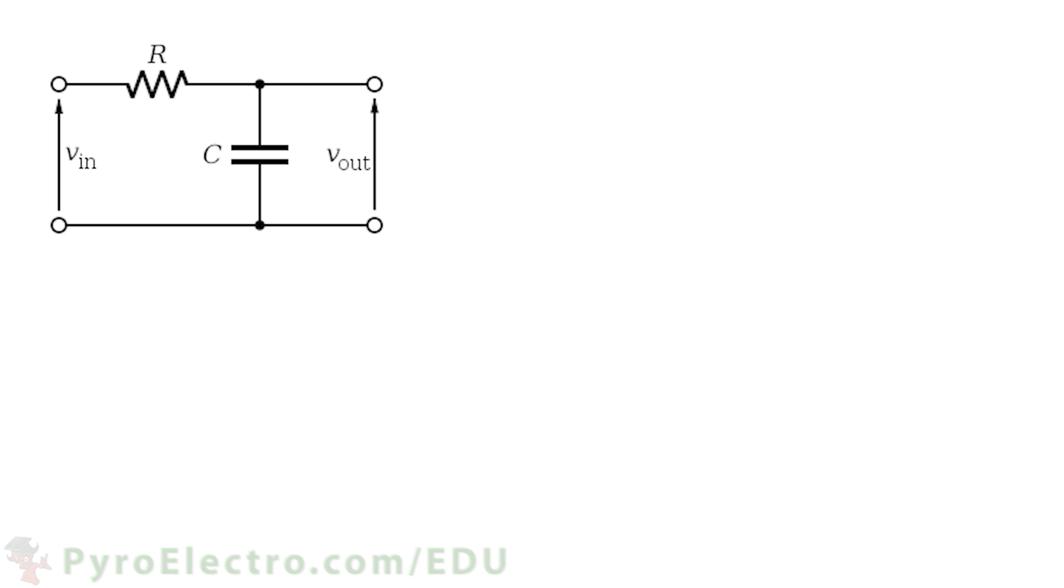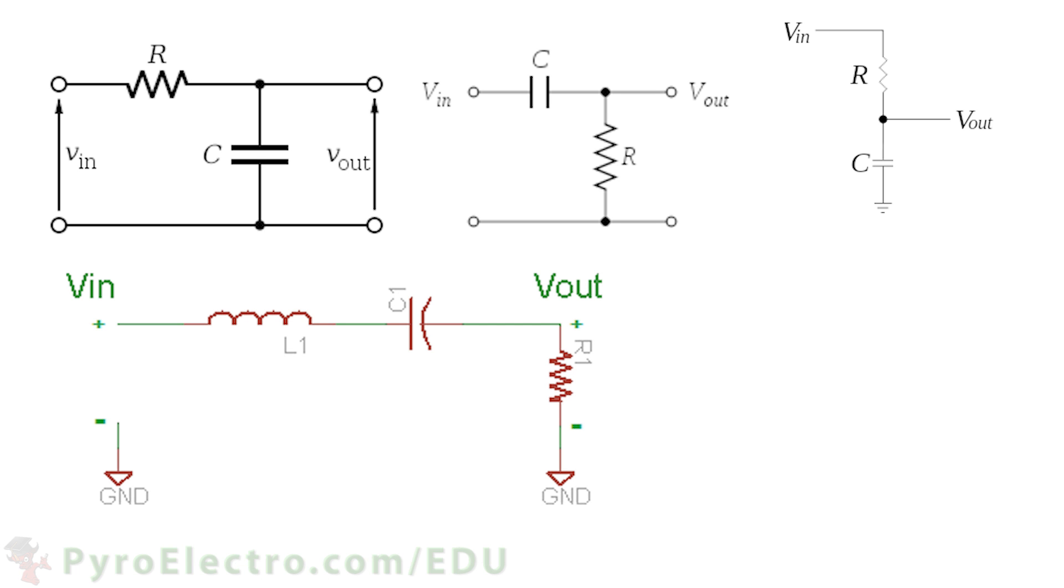In the last two lessons, we explored how to make different types of filters using only resistors, capacitors, and inductors. These types of filters are known as passive filters because they do not inject any extra power into the signal as it passes through the filter.